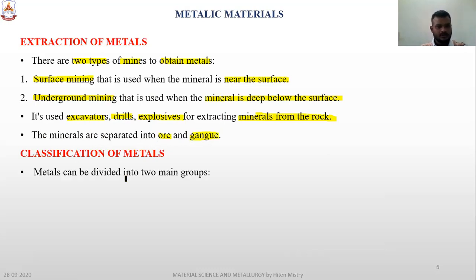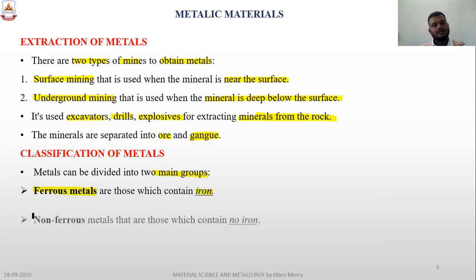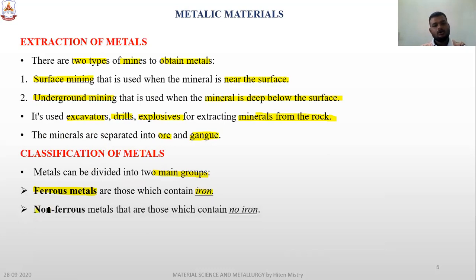The classification of metals: metals are divided basically into two groups. The first is ferrous metal, which contains iron, and the second is non-ferrous metal, which does not contain any form of iron.